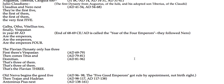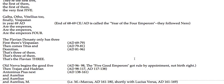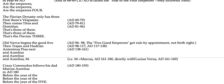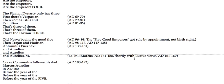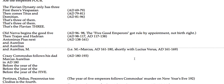The Flavian dynasty only has three: first Vespasian, then comes Titus and Domitian — that's the Flavian three. Old Nerva begins a good five, then Trajan and Hadrian. Antoninus Pius next, and Aurelius — Crazy Commodus follows his dad, Marcus Aurelius.